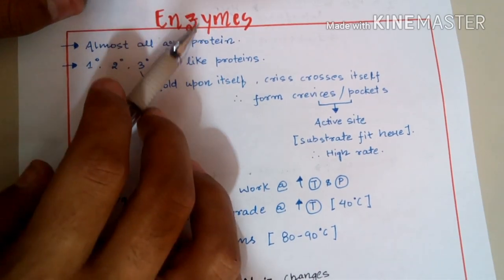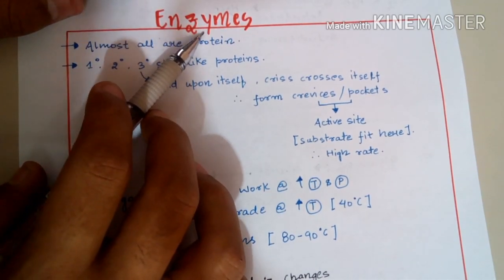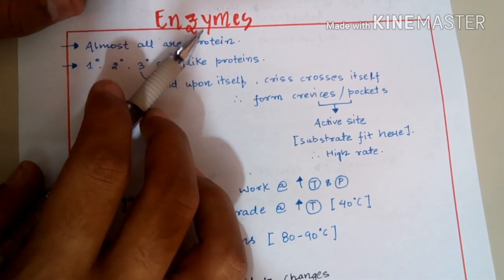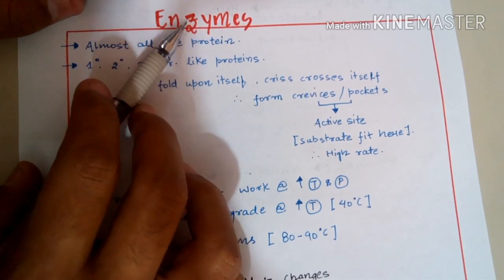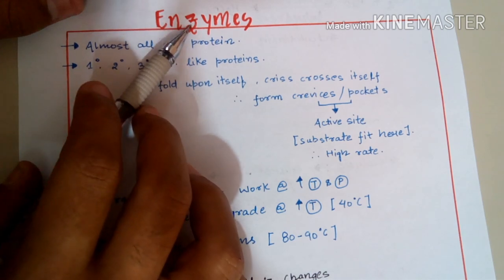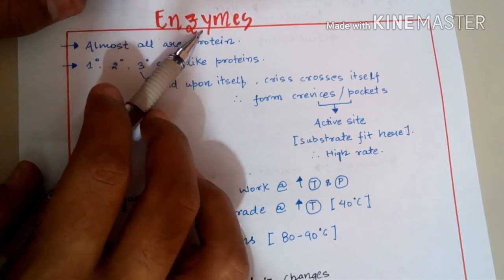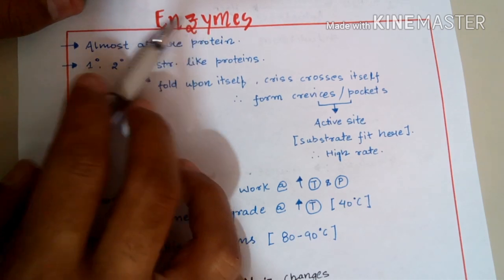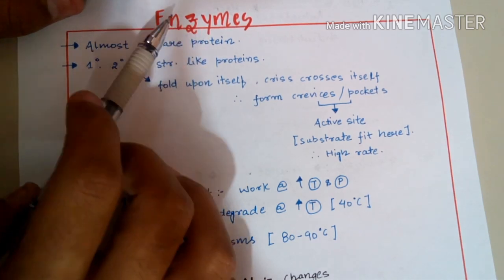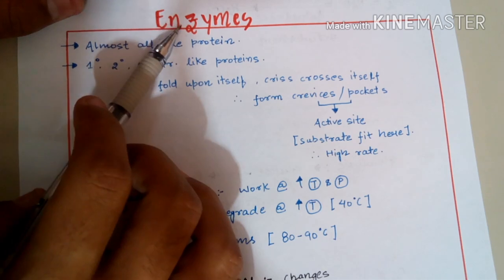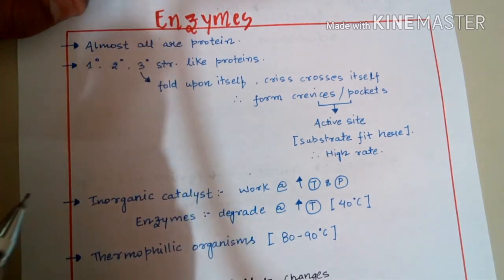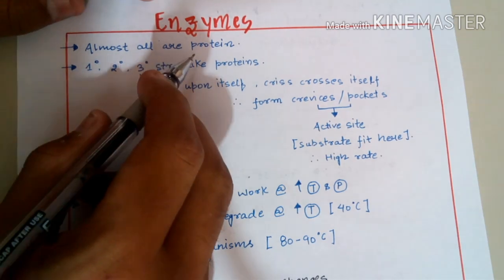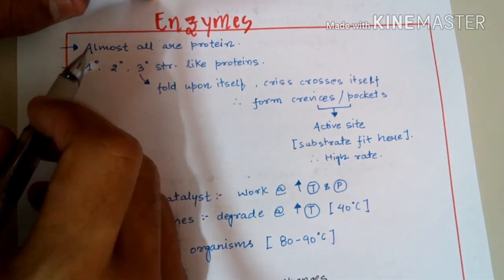Enzymes are biological catalysts. Catalysts are chemical compounds which change the rate of reaction — they either increase the rate of reaction or decrease it. Since enzymes work in a biological system, they are known as biological catalysts.